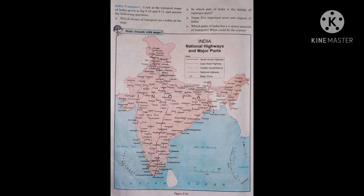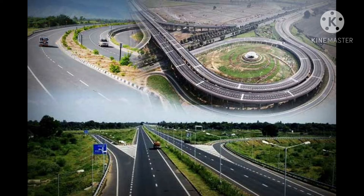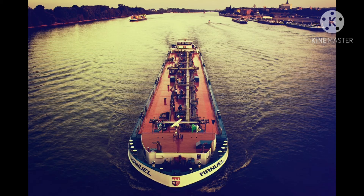Now we are going to study the transportation system in India. Look at the transport maps of India given in figures 9.10 and 9.11. Figure 9.10 shows national highways and major ports in India, while figure 9.11 shows important airway routes and airports. The first question: which means of transport are visible on the map? Figure 9.10 shows national highways and ports — roadways and waterways. Figure 9.11 shows railway routes and airports — airways and railways.